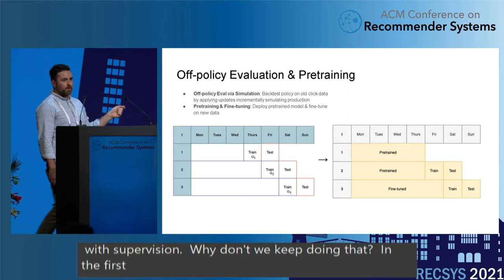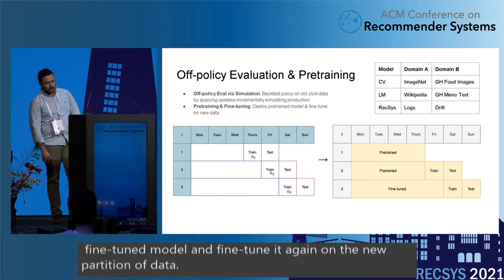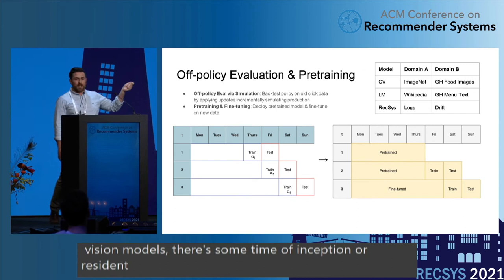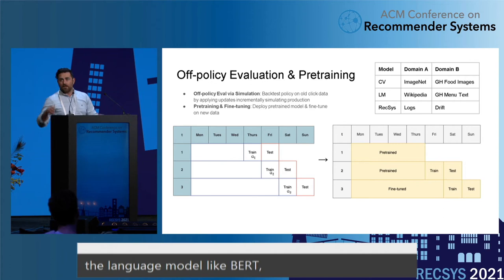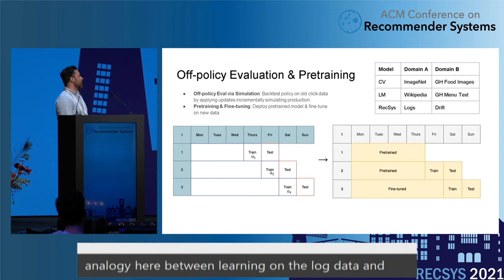There's an interesting analogy here between fine-tuning and domain adaptation from other domains. In vision models, there's an Inception or ResNet trained on ImageNet that you can fine-tune to fit, for example, Grubhub food images. With a language model like BERT trained on Wikipedia and book datasets, you can fine-tune it to adapt to the Grubhub menu text domain. Similarly, I think of learning on log data and then fine-tuning on new partitions as a domain adaptation approach to combat drift.